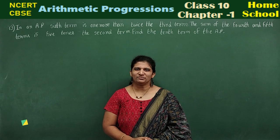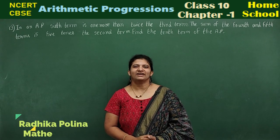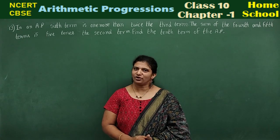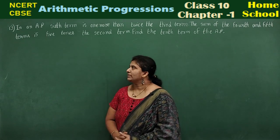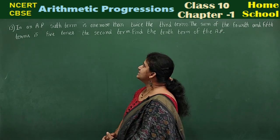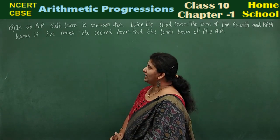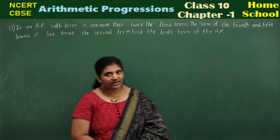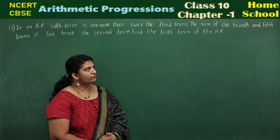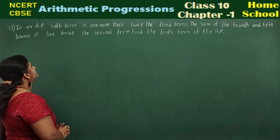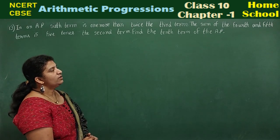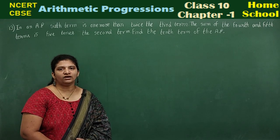Hi, hello, welcome to homeschool. This is your class 10 mathematics NCERT or CBSE board application problems. Thirteenth problem: in an AP (arithmetic progression), the sixth term is one more than twice the third term. The sum of the fourth and fifth terms is five times the second term. Find the tenth term of the AP.